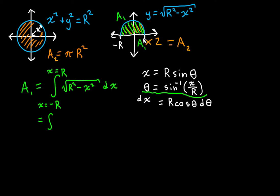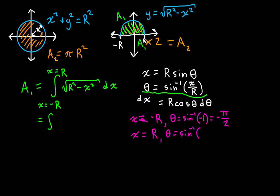When x is equal to negative r, theta is equal to the arcsine of negative r over r, which is negative 1 — and we know that equals negative pi over 2. When x is equal to r, theta is equal to the arcsine of r over r, which is 1, and that's pi over 2. So when we change things to theta, we are taking the integral from theta equals negative pi over 2 to theta equals pi over 2.